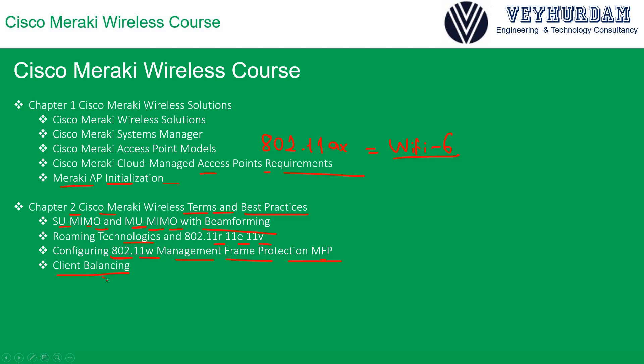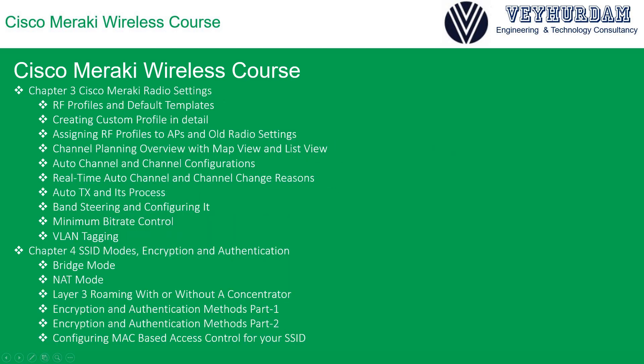We will do a deep dive into client balancing and understand how it can be configured very easily using the Cisco Meraki dashboard. Chapter 3 will start with radio settings — what RF profiles are, how we can configure them, what the default templates are, and how to create custom profiles. We will always follow along on the Meraki dashboard with hands-on practice.